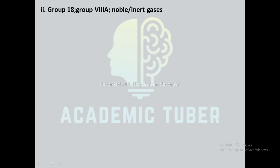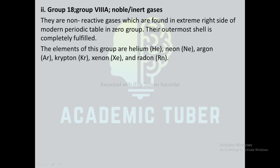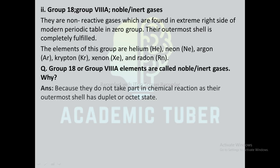Group 18 or noble/inert gases (group 8A): they are non-reactive gases found in the extreme right side of the modern periodic table in zero group. Their outermost shell is completely filled and the elements of this group are helium, neon, argon, krypton, xenon, and radon. Group 18 elements are called noble or inert gases because they do not take part in chemical reactions as their outermost shell has a duplet or octet.